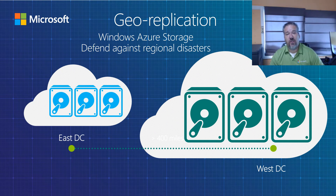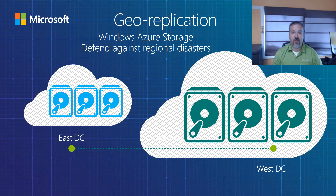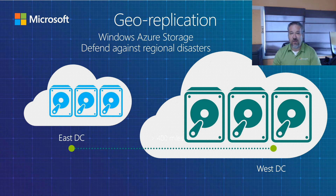Microsoft also offers geo-replication. By default, when you create your account and start doing backups, you have locally redundant storage — three data centers, each the size of a super Walmart store — and your data is replicated across those three. If you choose geo-replication, Microsoft Azure will replicate your data across two regions, each with three data centers, giving you six total copies. The regions must be a minimum of 400 miles apart — for example, US East replicates against US West, and South Central replicates against North Central.